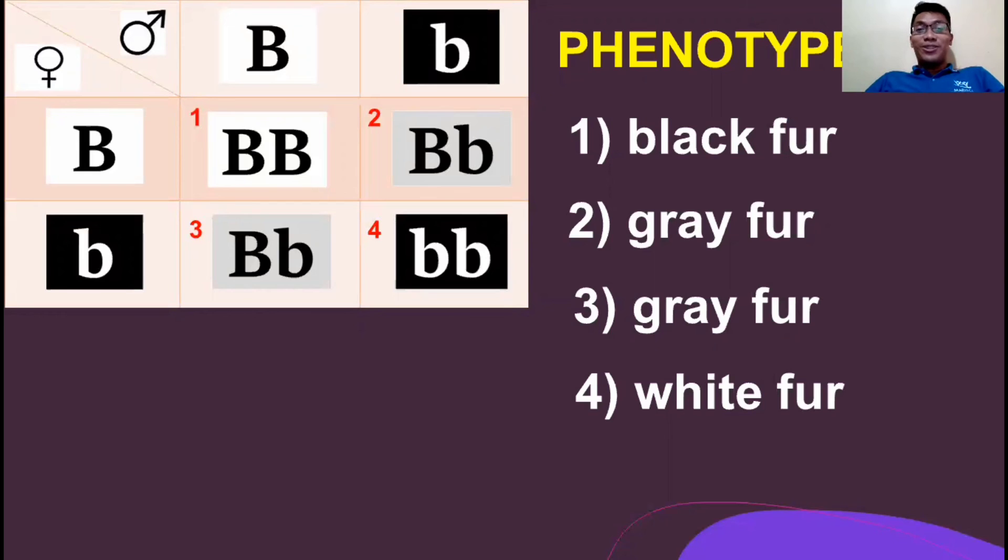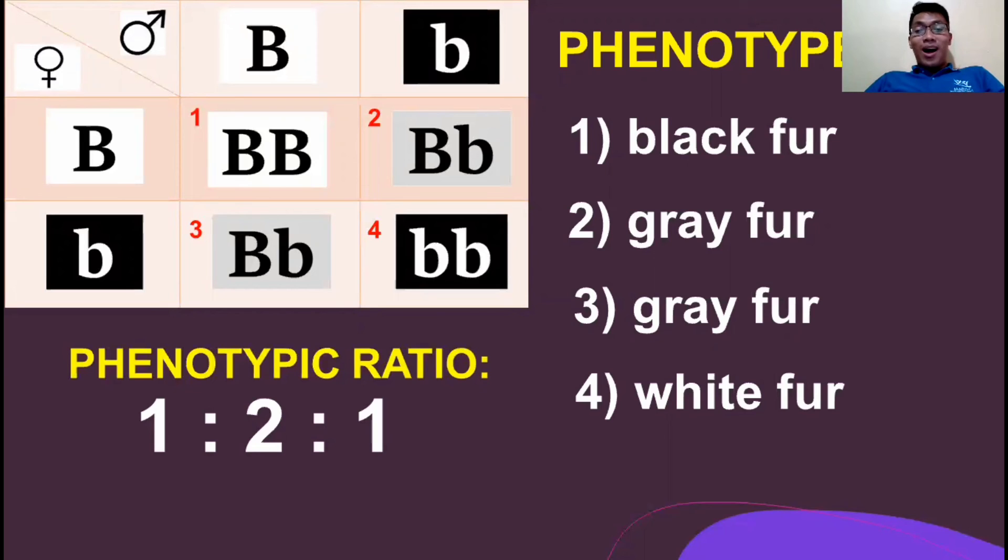So what do we mean by this result? We could have a phenotypic ratio of 1 is to 2 is to 1. It means that one black, two grey, and one white. Or in percentage, it could be represented as 25% is to 50% is to 25%.